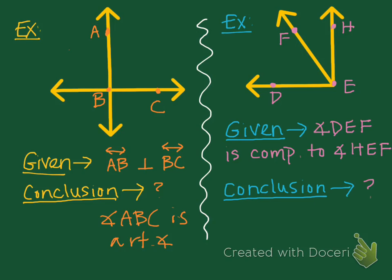Here's another example. We have this picture, and we are told by our given that angle DEF is complementary to angle HEF. Remember what complementary means — complementary means that if you add them together, they will equal 90 degrees. So we have our angle symbols, complementary adds up to 90. We think back to the theorems we know: two angles whose sum is 90 degrees are complementary angles. We can always reverse definitions.